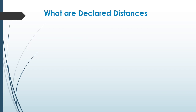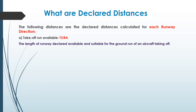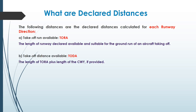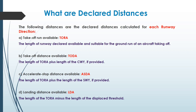Now it is time we understand the declared distances. There are four declared distances calculated for each direction of the runway. The takeoff run available, or TORA, is the length of the runway declared available and suitable for the ground run of an aircraft taking off. The takeoff distance available, or TODA, is the length of TORA plus the length of clearway if provided. Third is the accelerate stop distance available, or ASDA, which is the length of TORA plus the length of stopway if provided. The fourth is the landing distance available, or LDA, which is the length of TORA minus the length of the displaced threshold.